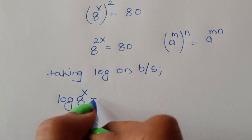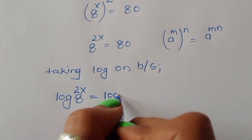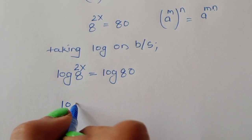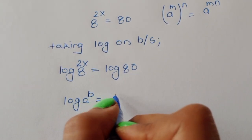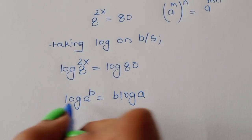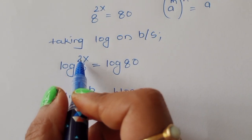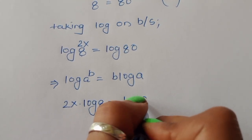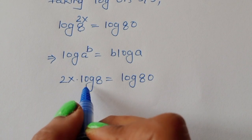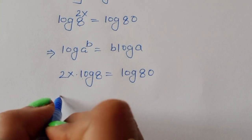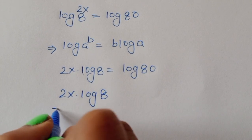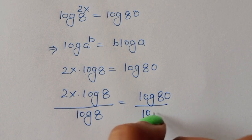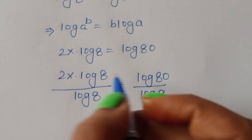Taking log on both sides gives us log(8^(2x)) = log(80). We use the formula: log(a^b) = b·log(a). Applying this formula, we get 2x·log(8) = log(80). Now we divide both sides by log(8) to cancel that term.